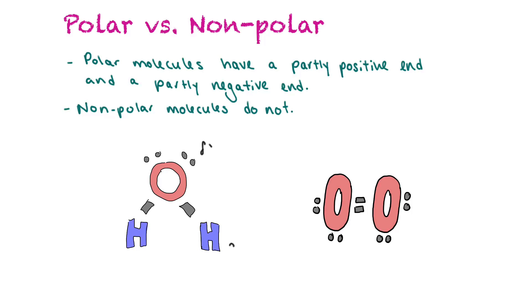And then down here, hydrogen does not have lone pairs of electrons and doesn't have a very good hold on electrons at all. So it has a partly positive end. So water is a polar molecule.